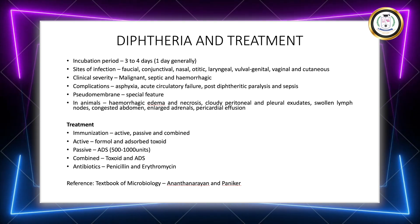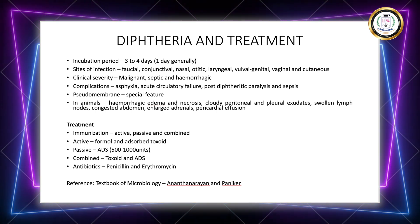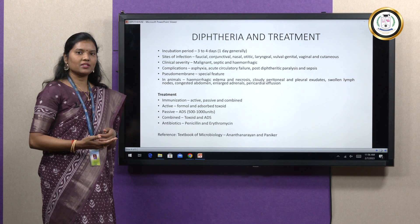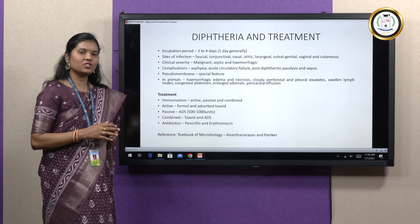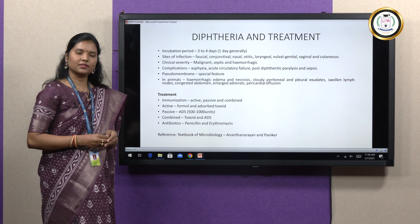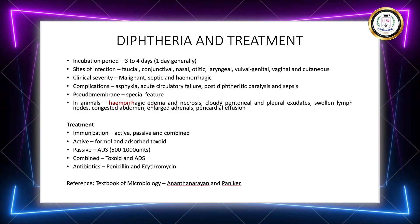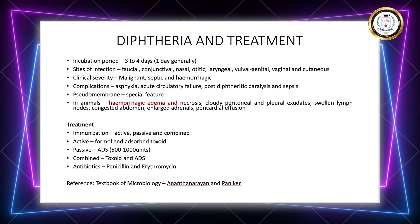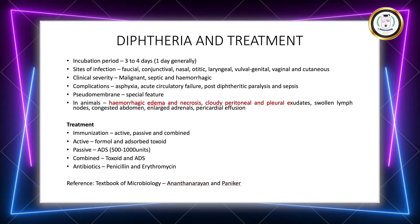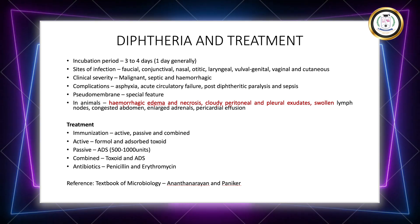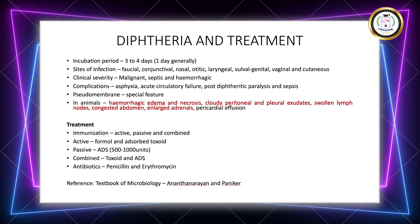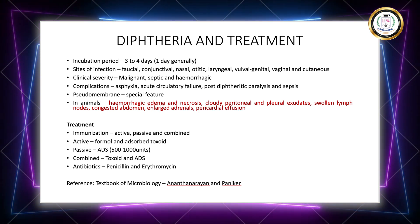Diphtheria is basically a human infection and does not generally infect animals, but animals can be experimentally infected. If guinea pigs are infected with diphtheria toxin, they die within 1 to 4 days, producing symptoms like hemorrhagic edema and necrosis, swollen draining lymph nodes, cloudy peritoneal and pleural exudates, congested abdominal viscera, enlarged hemorrhagic adrenal glands, and pericardial effusion — a large accumulation of fluid in the pericardium of the heart.